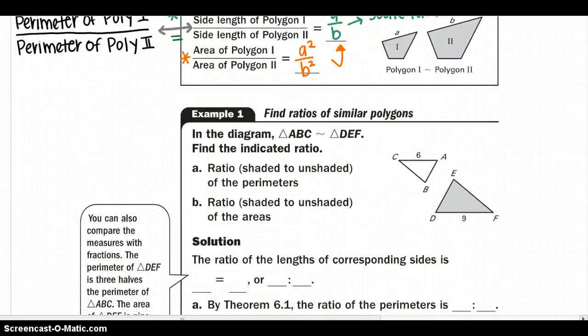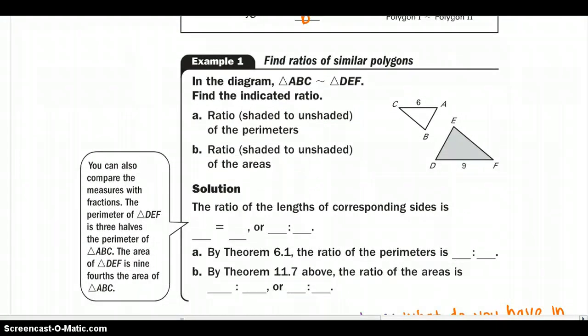Let's go down to the first example. In the diagram, we know that triangle ABC is similar to DEF. We want to find the indicated ratios - the ratio of the shaded to the unshaded. Remember that DF, if you look in how it is labeled, is similar to AB. So we can say 9 over 6 is equal to, if you break it down, 3 over 2. And then the ratio would be 3 to 2.